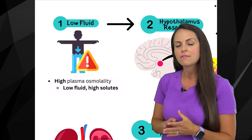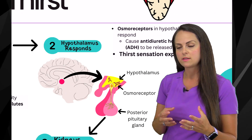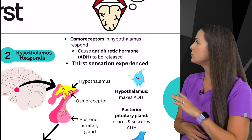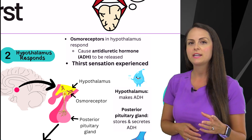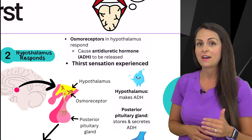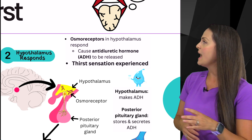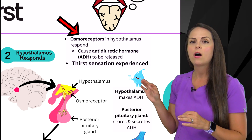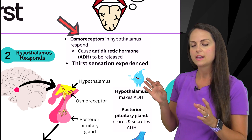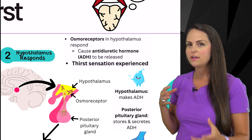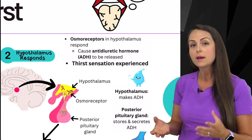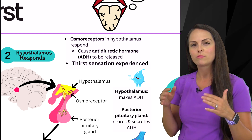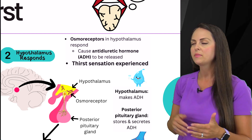Whenever we have a high blood plasma osmolality, it's going to cause the hypothalamus to respond — particularly the osmoreceptors inside the hypothalamus. Notice that word: osmo, relating to osmolality. These receptors are very sensitive to the blood plasma's osmolality and respond when it is high.